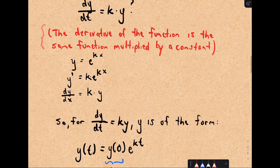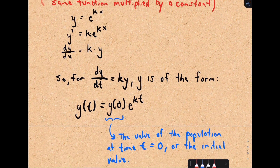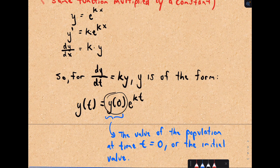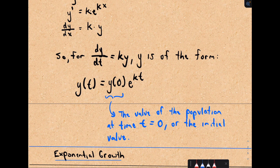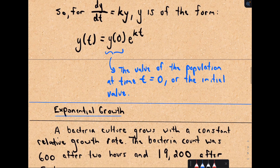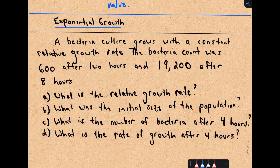You can include some initial amount, and this will still be true. So for dy/dt = k·y, the solutions are of the form y = y₀·e^(kt), where y₀ is typically the initial value of the population. Let's do a couple of examples — they can be a little long and tedious, but we'll get through them as quickly as possible.